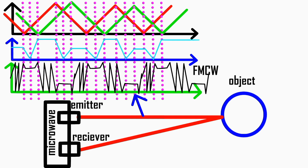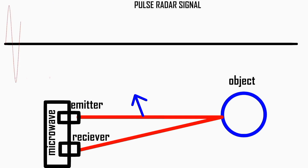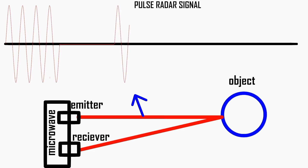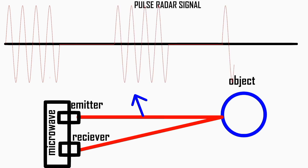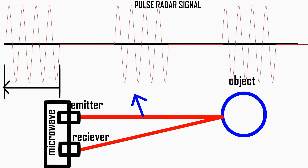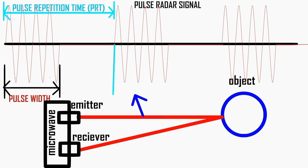Pulse radar sensors emit short bursts of microwave energy and measure the time it takes for the signal to return. These sensors are commonly used in security systems to detect the presence of intruders, or in automobile applications to avoid collisions.